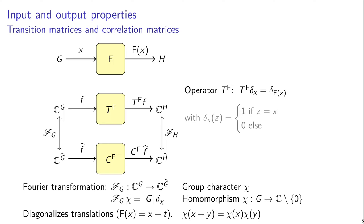So the Fourier transformation goes from the delta function basis to the basis of group characters. Because we don't want to give an arbitrary labeling to those group characters, we simply index the basis functions by elements of group G hat, which is the group of all the group characters.